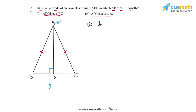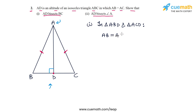To prove this, we are going to compare triangle ABD and triangle ACD. We look at the corresponding parts which are equal in these two triangles. We have AB equal to AC, which is given to us. We also note that AD is common to both triangles.